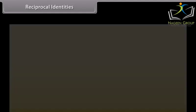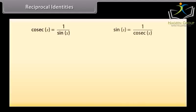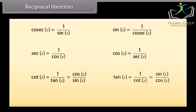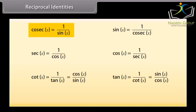Trigonometric identities are equalities that involve trigonometric functions and are true for every single value of the occurring variables. Reciprocal identities — look at these identities: cosec X is equal to 1 by sine X, and sine X is equal to 1 by cosec X.